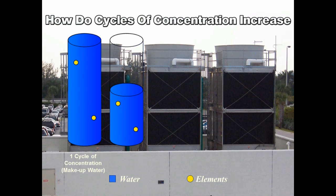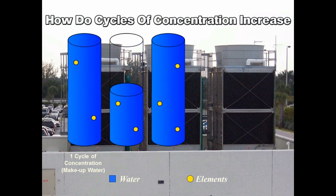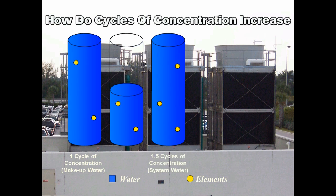Fresh makeup water is added to the tower to replace the water that evaporated. This also adds 50% more elements to the tower water, increasing its concentration to one and a half times that of the makeup water. The tower is now said to be at one and a half cycles of concentration.